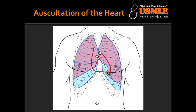What type of murmurs can be heard at the left sternal border? The murmurs include diastolic murmur and systolic murmur. Conditions leading to diastolic murmur include aortic regurgitation and pulmonary regurgitation. The condition leading to systolic murmur is hypertrophic cardiomyopathy.